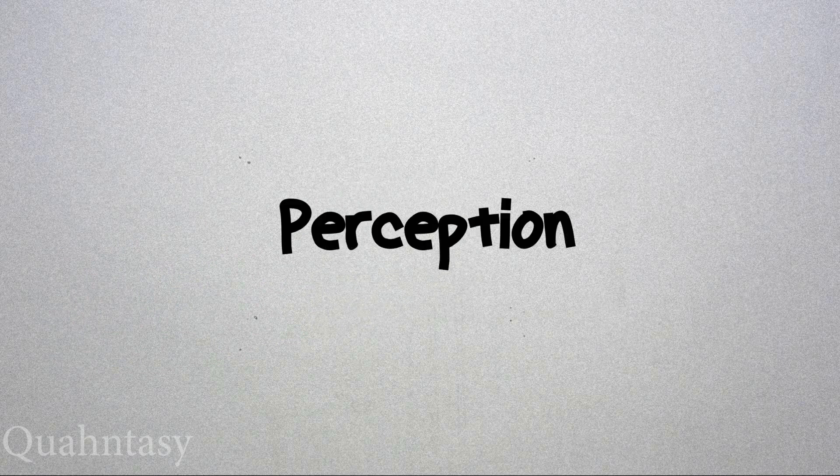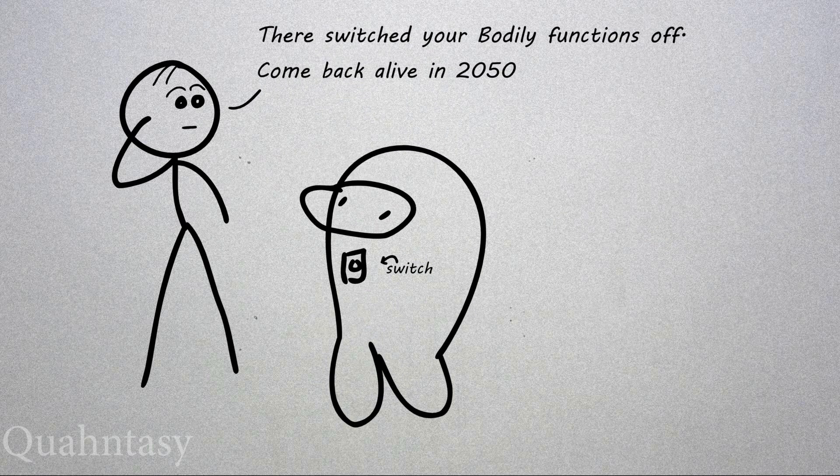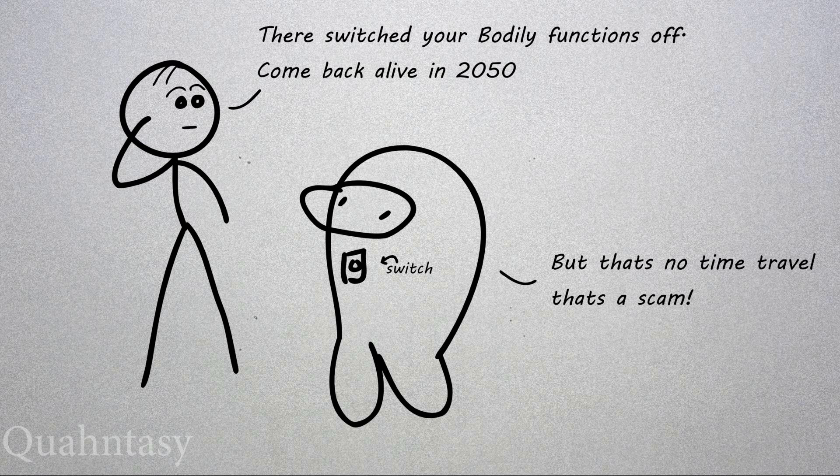Perception. Another way to travel to the future is maybe to slow down your perception of time by slowing down or stopping your bodily processes and then restarting them later. I know, I know. It's not the usual kind of time travel you were expecting, but it is time travel nonetheless.